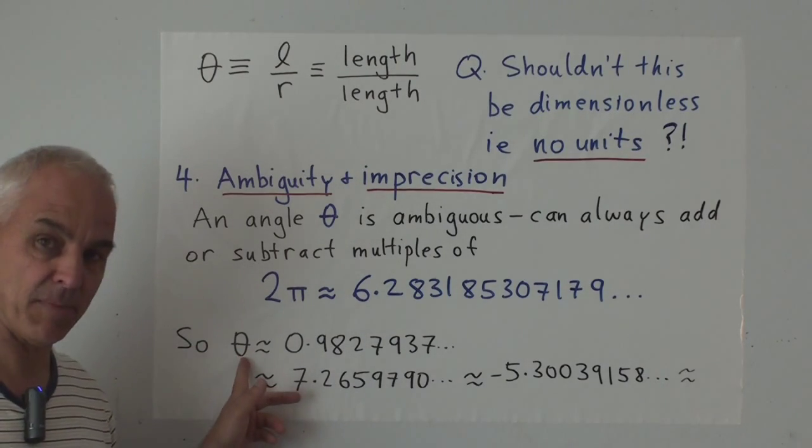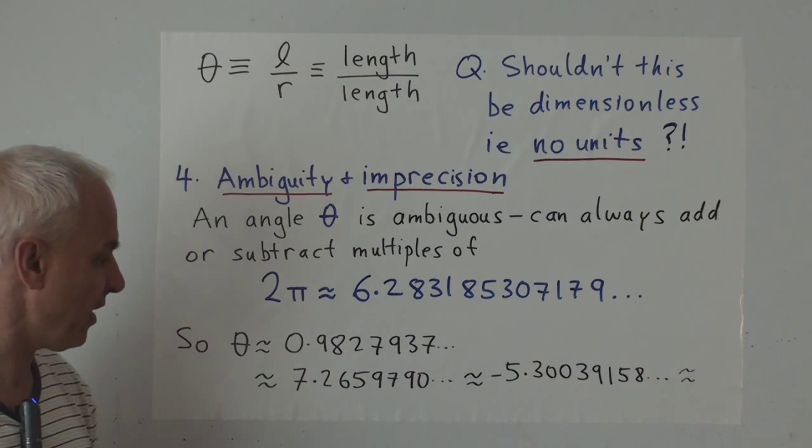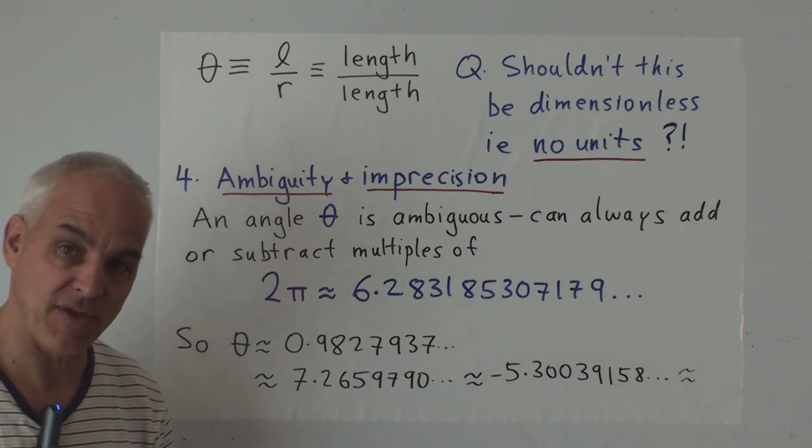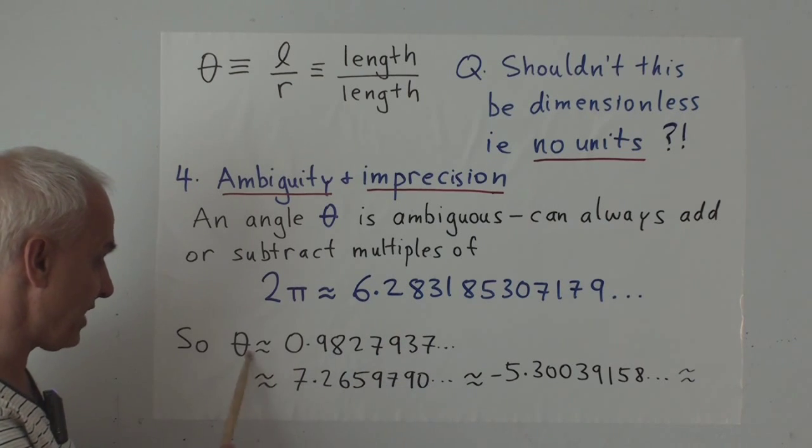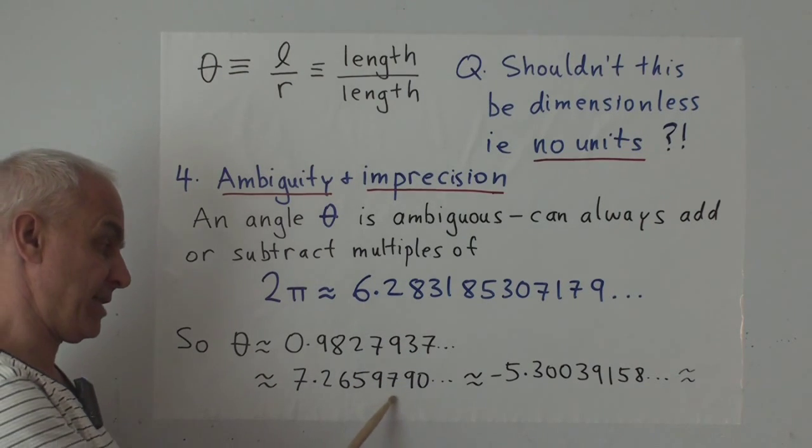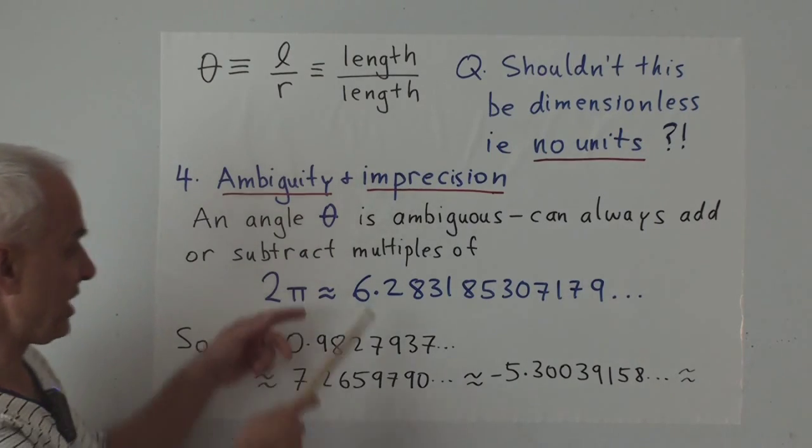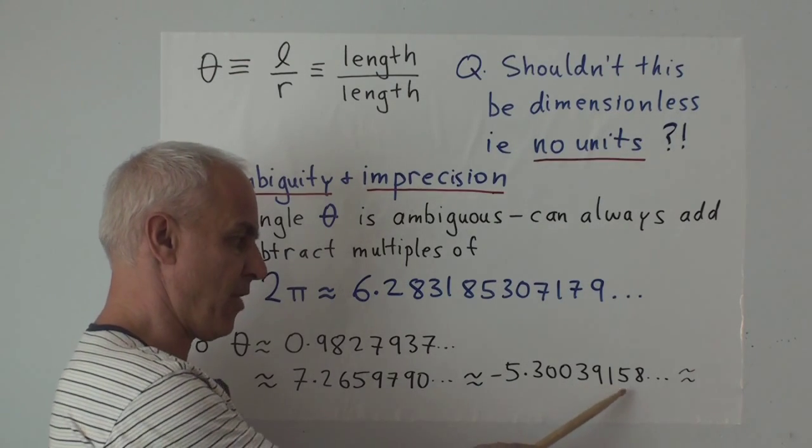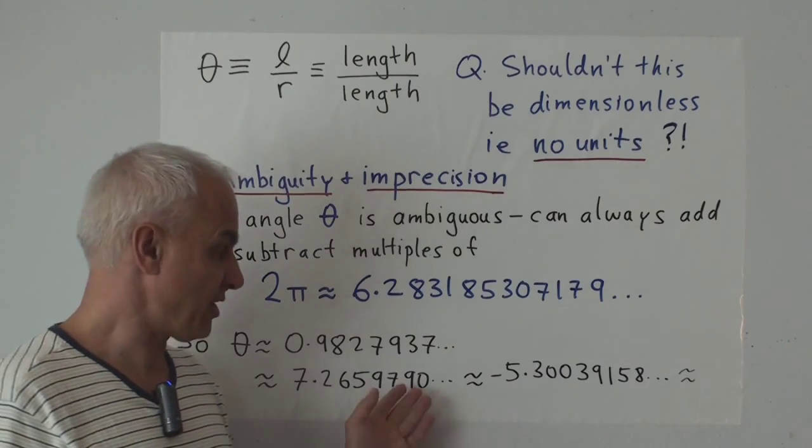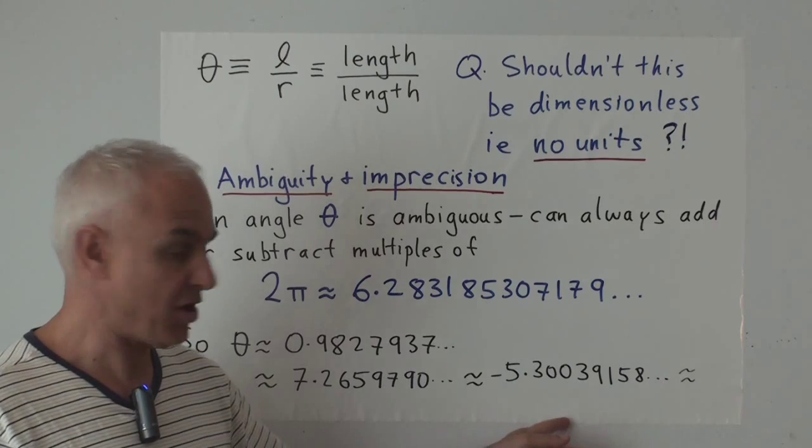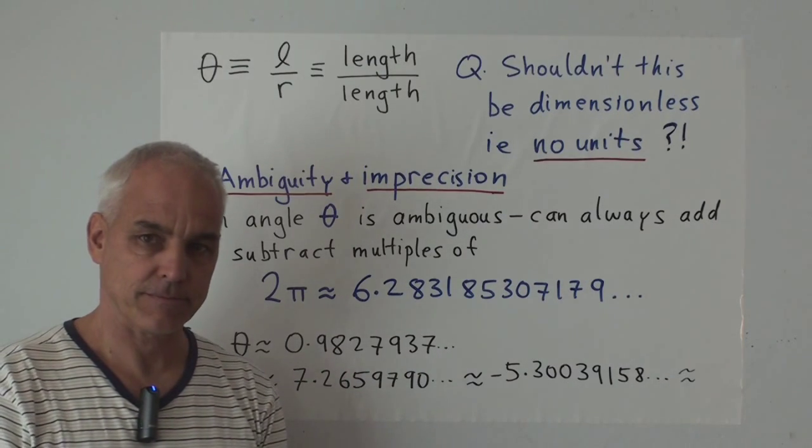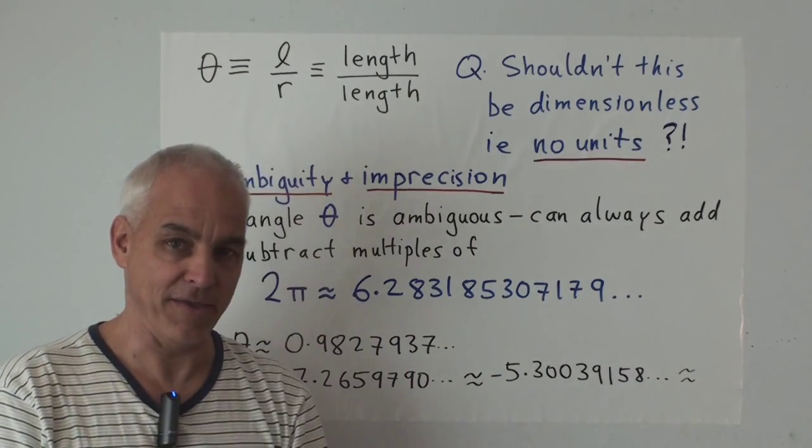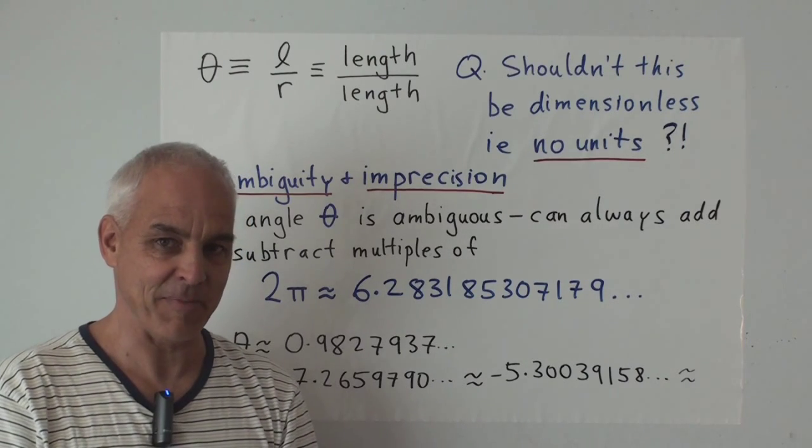But it means, for example, that the angle that we computed on the previous page, which was 0.98 and so on and so forth, has alternate equivalent formulations by adding multiples of this angle to it. So it's also equal to 7.2659790 dot dot dot. And if we had subtracted 2π instead, it's also equal to -5.30039158 dot dot dot. And there's trillions of other possibilities, all similarly complicated for this same angle. Your reaction to this should be something like, why are people doing this? This is really completely silly type of mathematics.